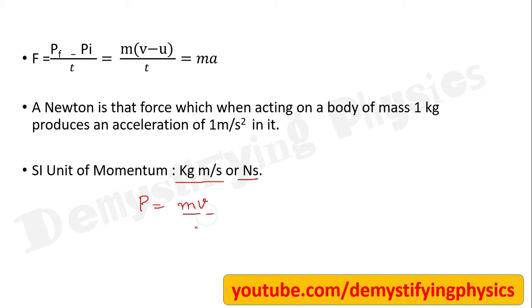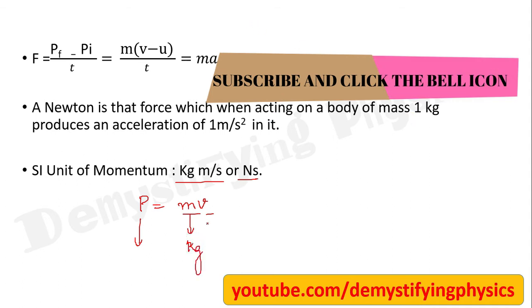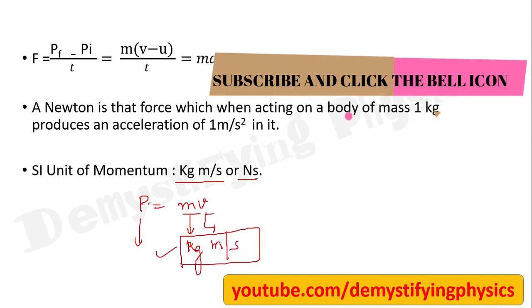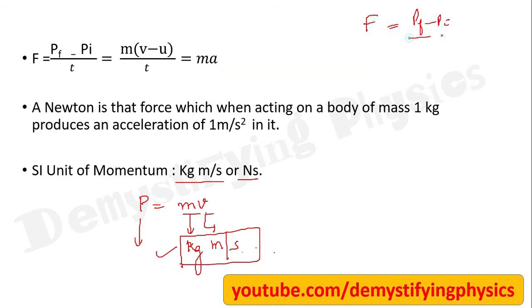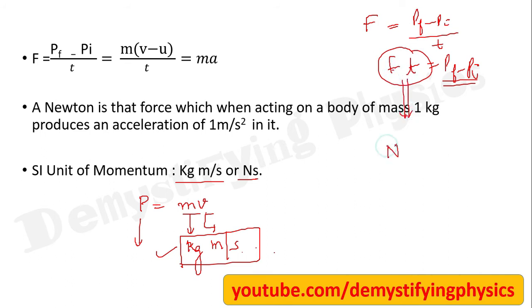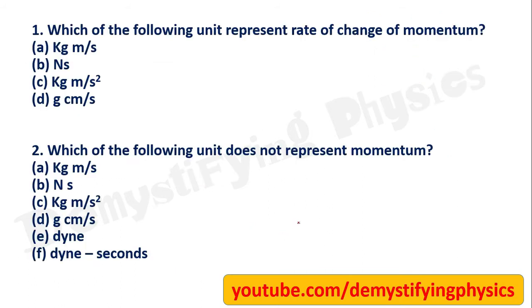Momentum is mass times velocity, so from the definition the SI unit of momentum is kg·m/s. From Newton's Second Law, force equals (pf - pi) / time, so force × time equals change in momentum. The unit of force is Newton and time is seconds, so the unit of momentum is also Newton·second. Both units — kg·m/s and N·s — are equivalent and can be used.